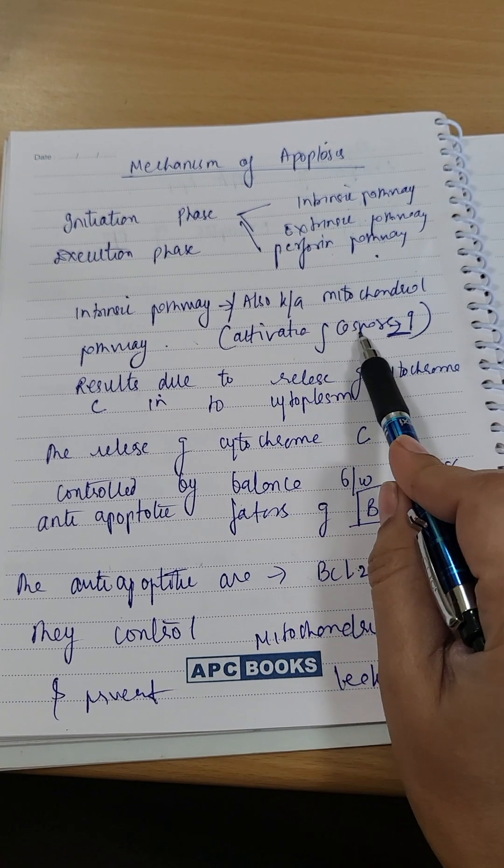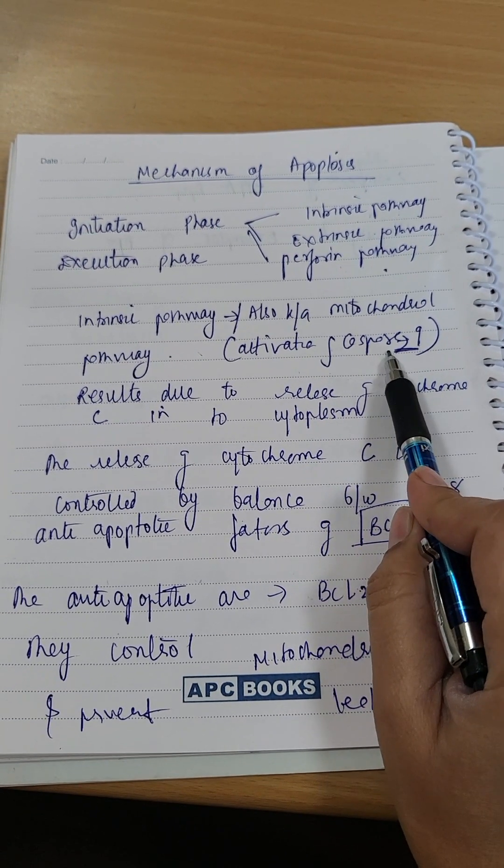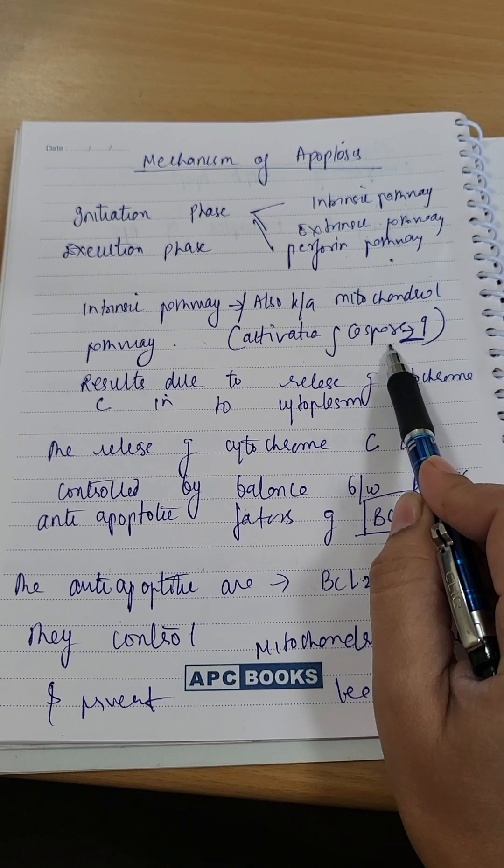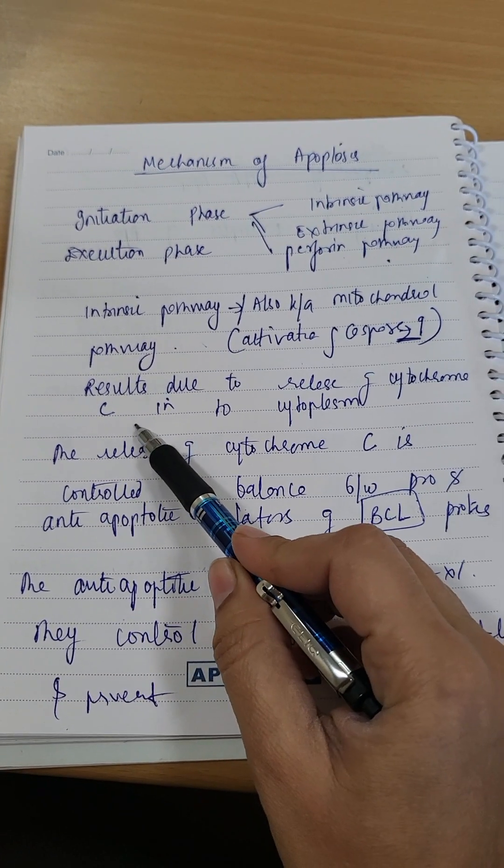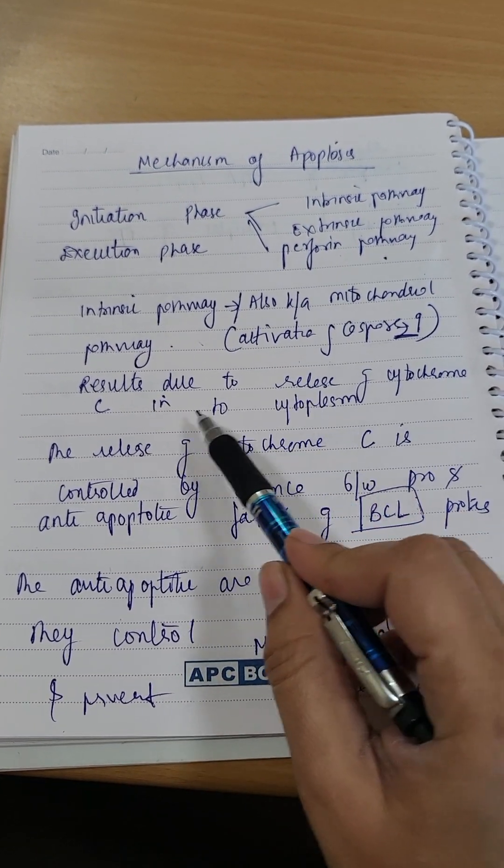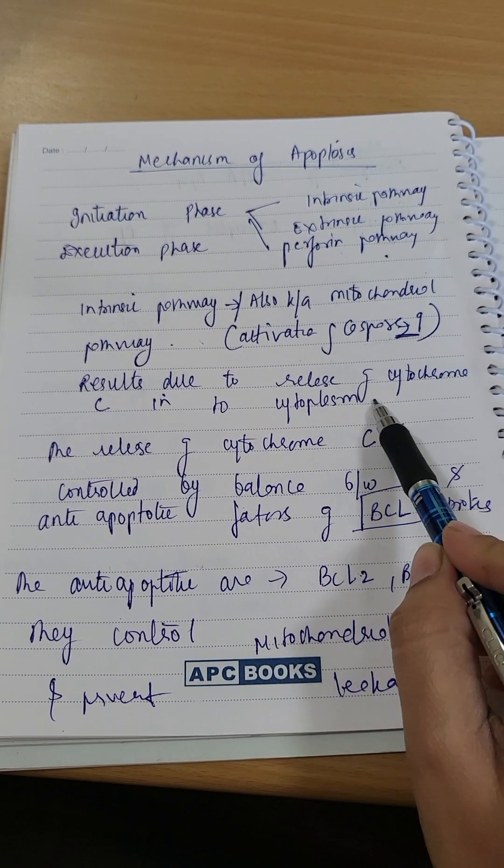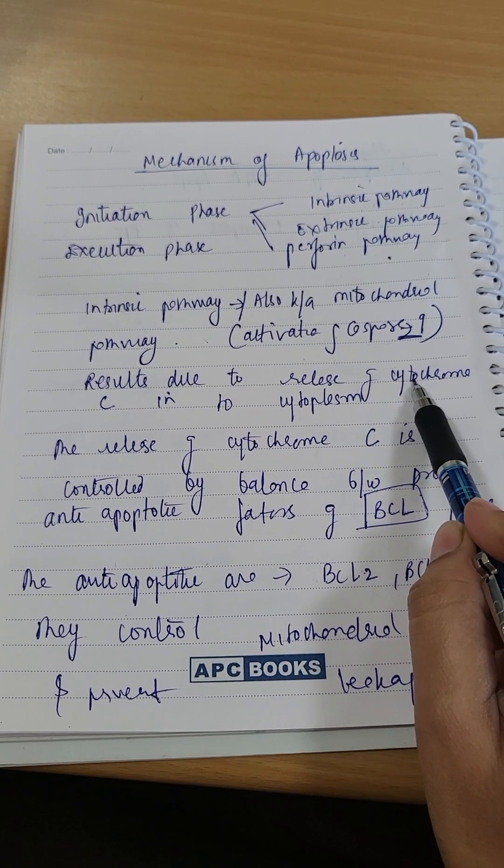Intrinsic pathway, which we also call mitochondrial pathway, involves activation of caspase 9. This results from leakage of cytochrome C into the cytoplasm. Cytochrome C is an important mitochondrial protein.